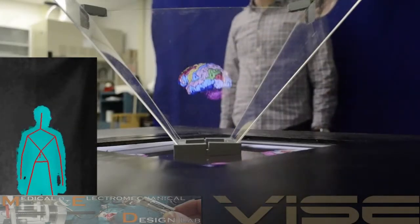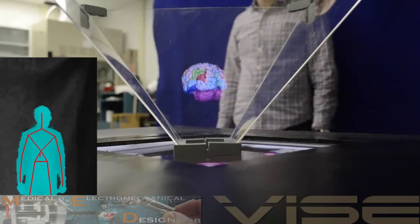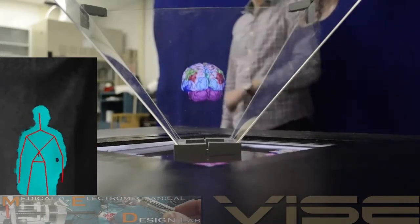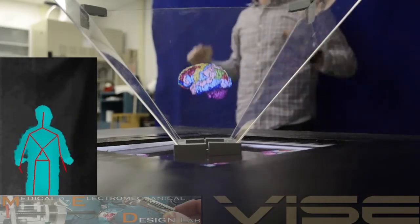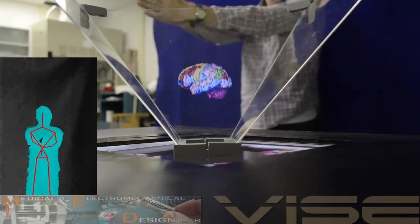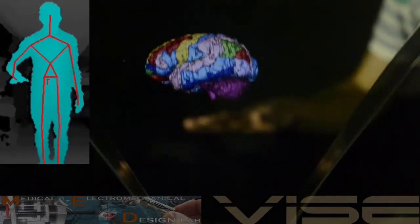The holographic display was combined with the Kinect sensor, allowing the user to use gestures to spin the volume and zoom in on the model. The Kinect was also used to position the brain volume in space using hand tracking.